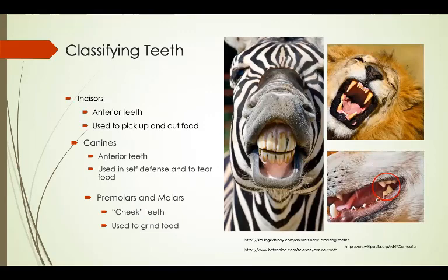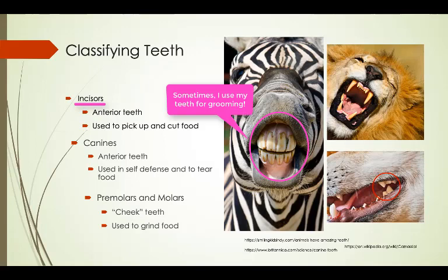First let's get familiar with classifying teeth. Incisors are located in the anterior of the mouth and are used to pick up and cut food. Some species like the zebra also use their teeth for grooming.